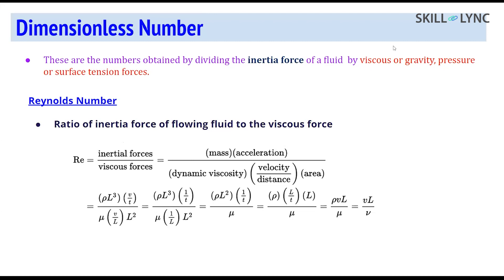For instance, Reynolds number is the ratio of inertia force divided by viscous force. The numerator is held constant and the denominator changes. The moment you change the denominator to any other variable you get a different dimensionless number. When you simplify the ratio of inertia to viscous forces you get rho times V times characteristic length divided by dynamic viscosity, and dynamic viscosity divided by rho gives kinematic viscosity.